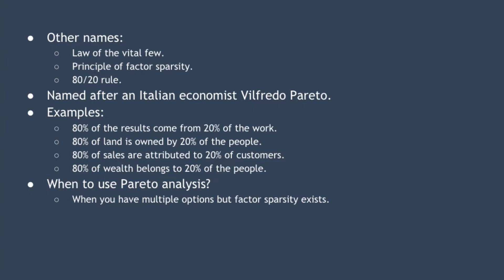Pareto analysis is also known by several other names including the law of the vital few, the principle of factor sparsity, the 80-20 rule, or the Pareto principle. It is named after Italian economist Vilfredo Pareto, who observed in the 19th century that 80-20 distributions exist everywhere. Examples include: 80% of results come from 20% of the work, 80% of land is owned by 20% of the people, 80% of sales are attributed to 20% of customers, and 80% of wealth belongs to 20% of the people.